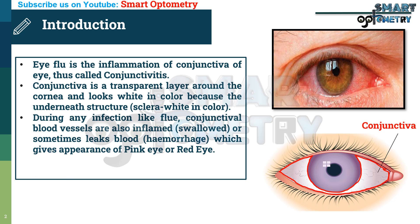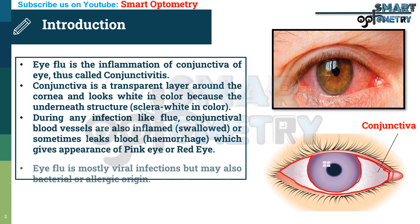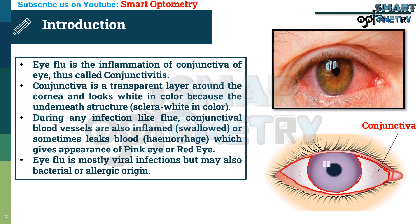During any infection, like flu, the conjunctival blood vessels are also inflamed or sometimes leak blood, which gives the appearance of pink eye or red eye. Eye flow is mostly a viral infection but may also be of bacterial or allergic origin.